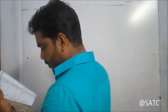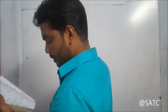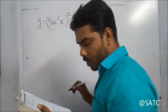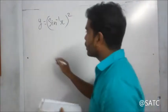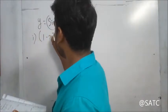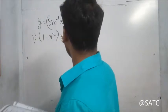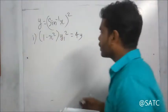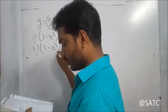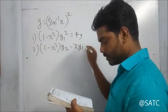y equals (sin inverse x) whole square. Prove that: question number 1, (1 minus x square) into y1 square is equal to 4y. Question number 2, (1 minus x square) into y2 minus x times y1 is equal to 2.